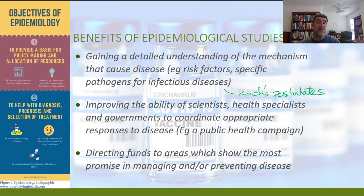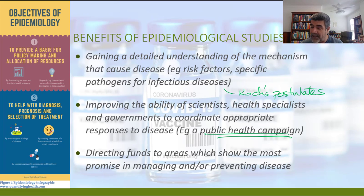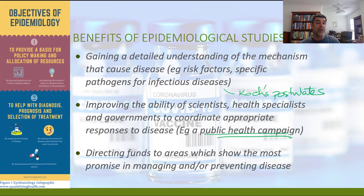It may also be that we're trying to improve the ability of scientists, health specialists, and governments to coordinate appropriate responses to diseases. We certainly have a number of public health campaigns, and in the current COVID crisis, there have been here in Australia, in New South Wales, a number of different public health campaigns — a lot of the most recent ones, of course, associated with increasing the number of people who are vaccinated.